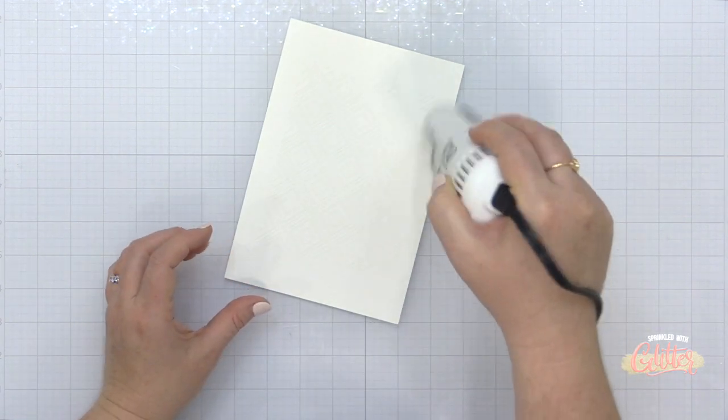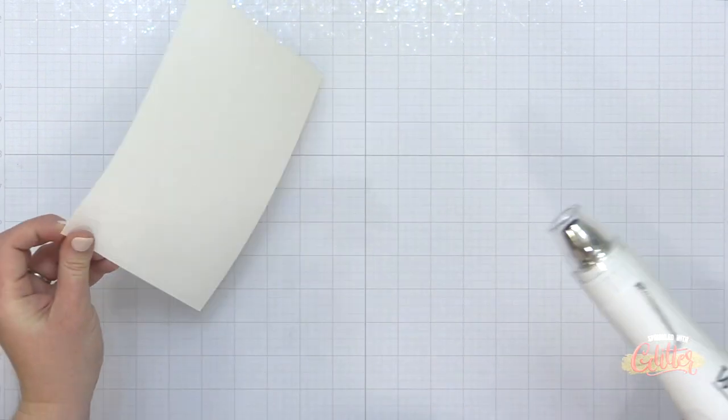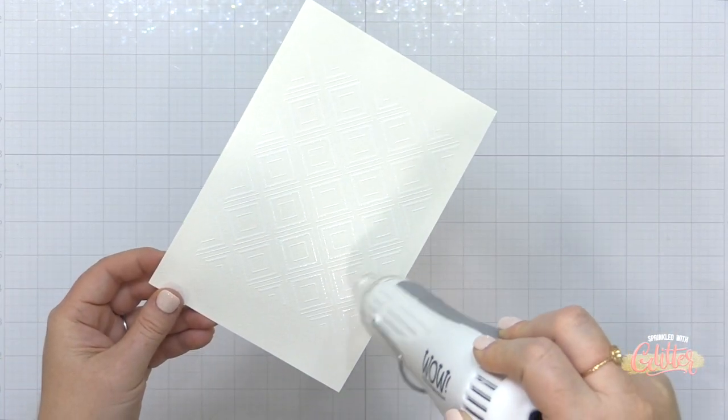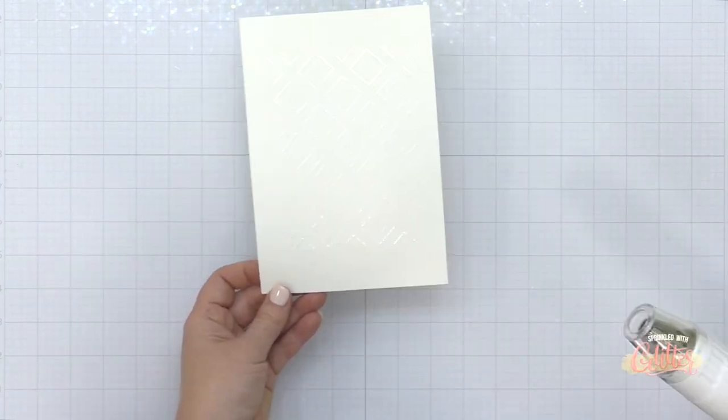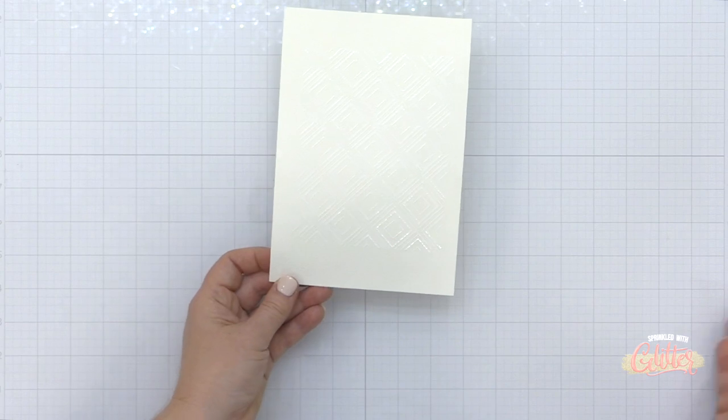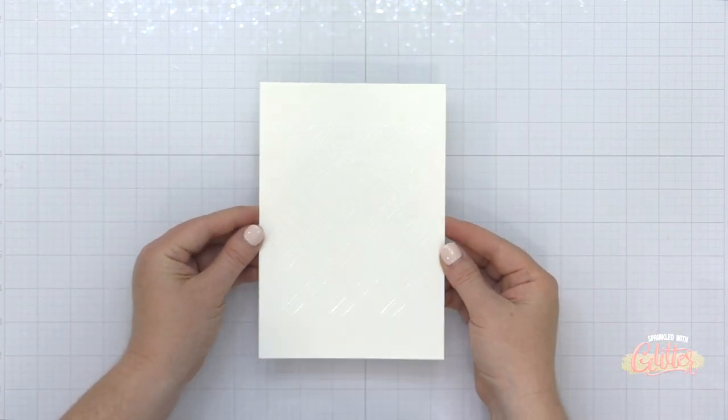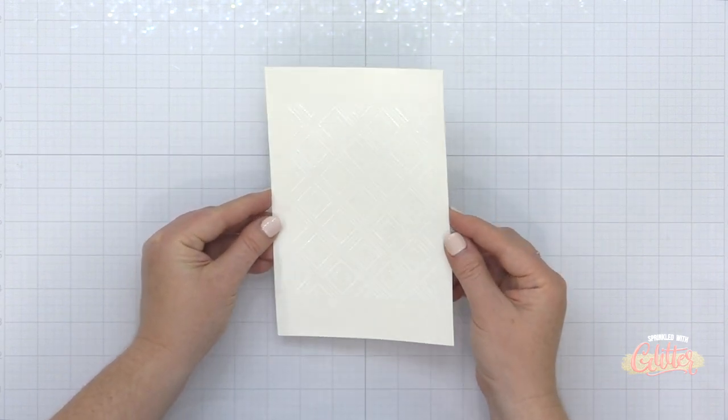So I've added some white embossing powder over this stamp design, which is very hard for you to see right now, but I can see it in real life. And then I'm going to heat set that embossing powder. And I love that this watercolor cardstock has a little bit of an ivory tone, and I have that crisp white embossing powder on top. And you can see I have a really cool design now embossed on this watercolor cardstock.